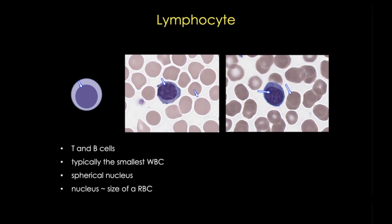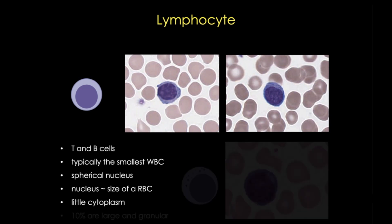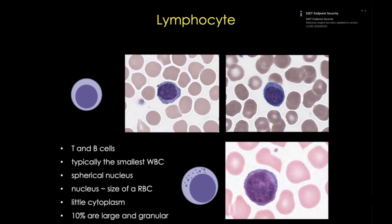Small lymphocytes typically have a nucleus roughly the same size as a red blood cell. Lymphocytes usually only have a thin surrounding rim of scant cytoplasm, and this cytoplasm is usually basophilic or blue. The larger lymphocytes, which are fewer, have nuclei larger than red blood cells and typically more cytoplasm — sometimes even a few pale blue granules or lysosomes. Importantly, the nucleus is still spherical, which allows us to distinguish this cell from monocytes and other white blood cells.